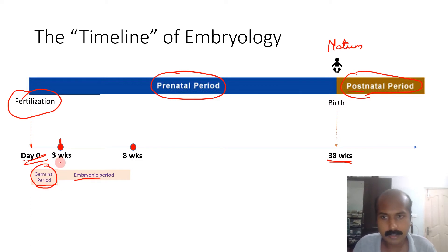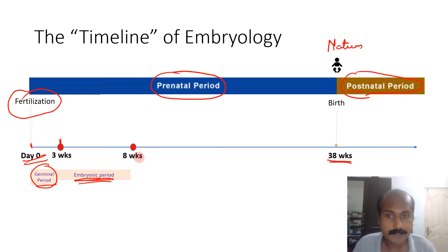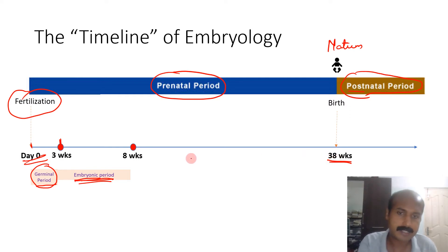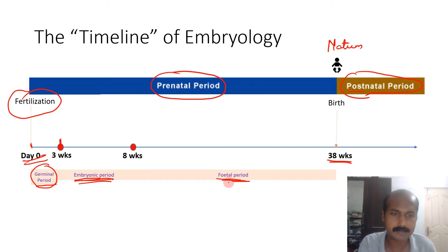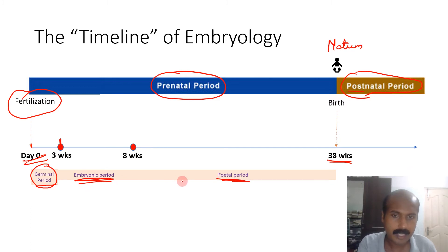From the third week to the eighth week the structure is called an embryo proper — that is the embryonic period. After eight weeks, from the ninth week onwards till birth, it is called the fetal period and the structure is called a fetus. So we have a germ cell collection, then an embryo, then a fetus.